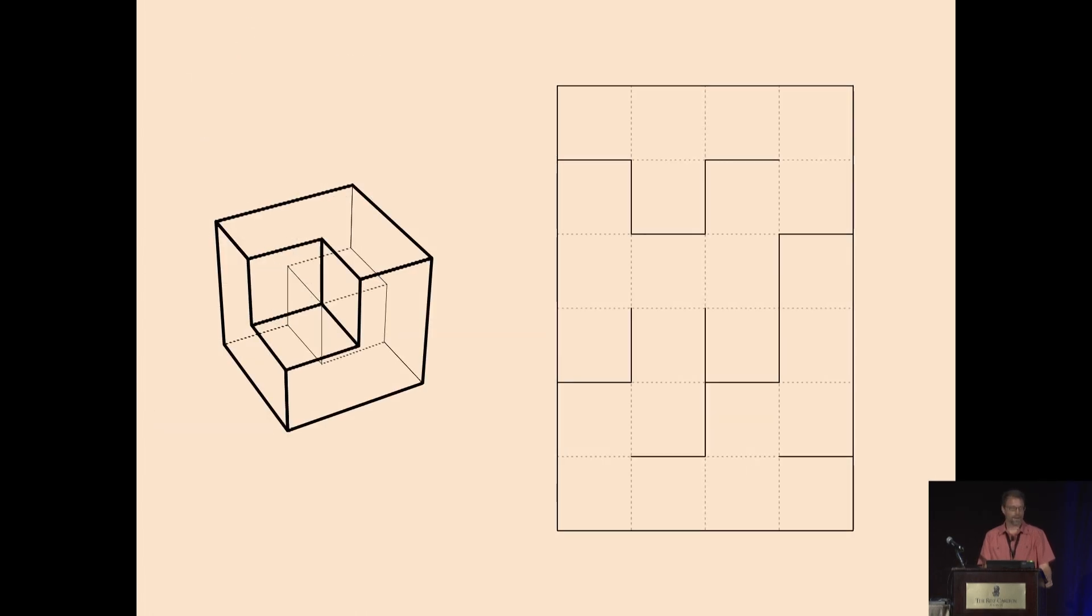And this is what that object looks like. It's a 2 by 2 by 2 cube with the opposite corners removed. So it's made out of 6 cubes, sort of in a hexagonal arrangement. And this is one of the characteristic nets for it on the right.